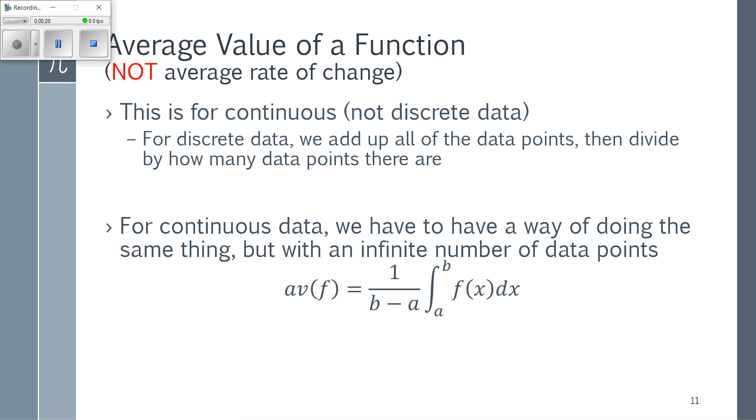So this all comes down to what kind of data we're dealing with. With things like your grades, when you're asked to find an average grade, you just add up your grades and divide by how many you have. Well, we can do that because it's discrete. There's a finite number of data points. So you're able to add them up and divide by how many there are.